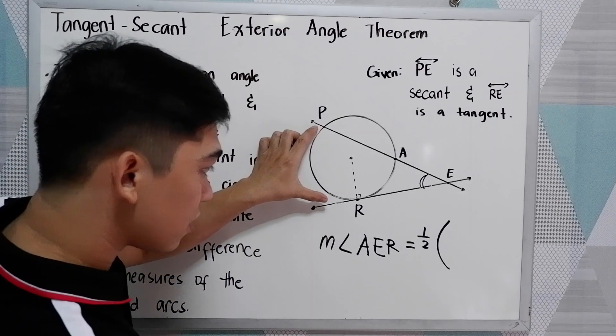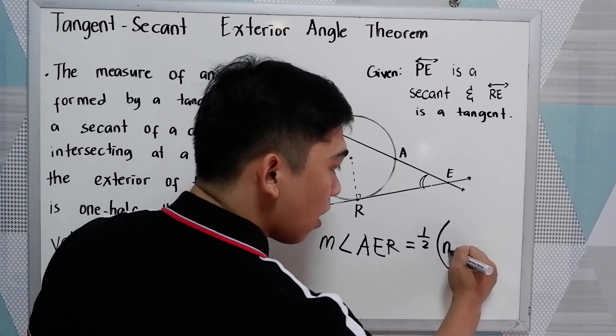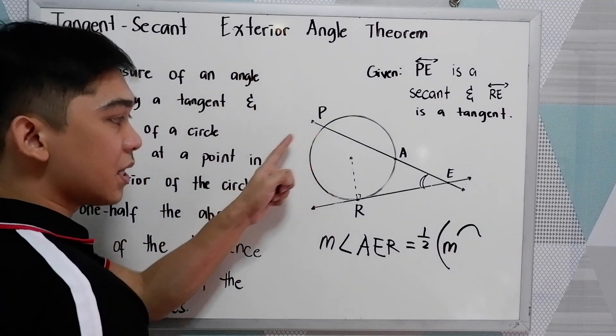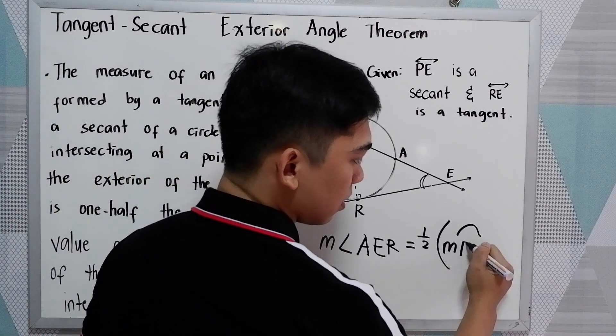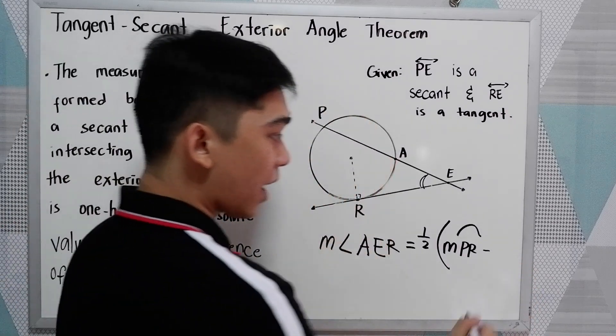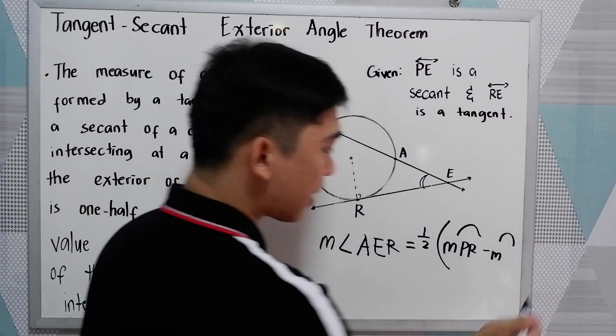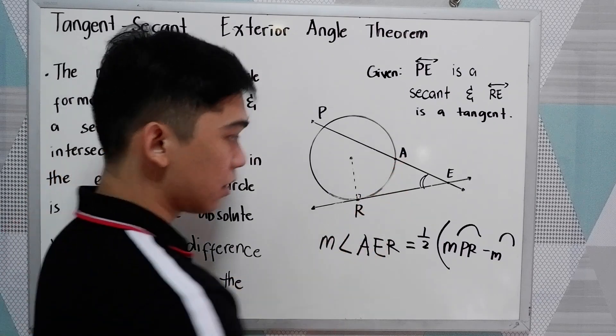So we have the arc, measure of arc PR, minus the measure of the arc AR.